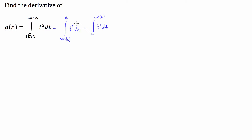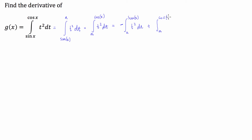If you know anything about the fundamental theorem of calculus, the independent variable has to be in the upper boundary of our integral. So here it's okay, but this sine of x needs to be up there. What we can do is flip the boundaries of integration from a to sine of x, and just add a negative sign out the front of t squared dt, plus a to cosine x of t squared dt.